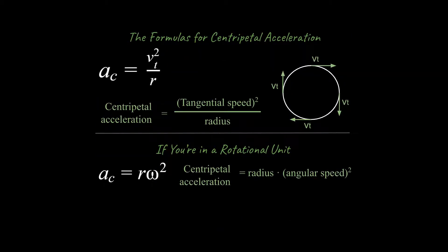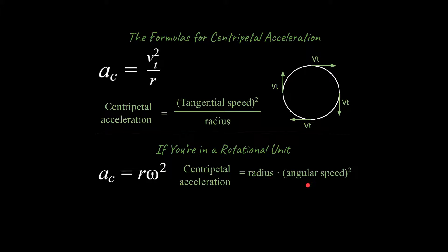Let's look at a couple of equations. The standard equation is: centripetal acceleration equals tangential speed squared divided by the radius, ac = v²/r. A tangent is a line that intersects a circle at only one point. If you are in a rotational unit, there's another form: centripetal acceleration equals radius times angular speed squared, ac = rω². Note that ω is omega — it looks like a W but it is omega, representing the rate at which the angle changes. I'll formally cover angular speed later, but I wanted to introduce it here.